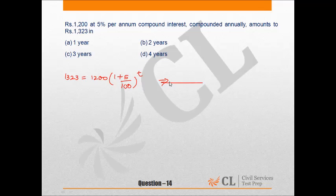Now from here we can write 1323 upon 1200 equal to 1 plus 5 upon 100 to the power t, that is 21 upon 20 to the power t.